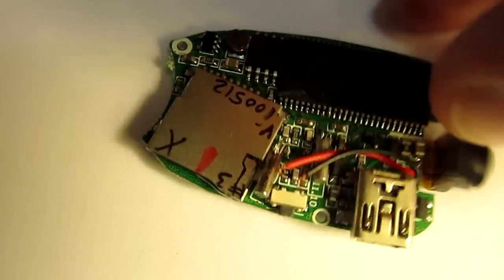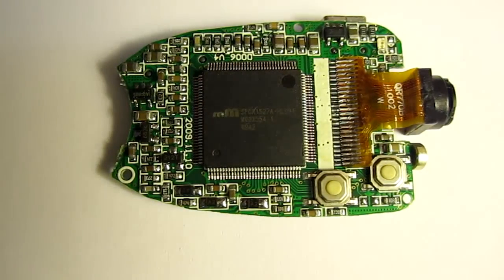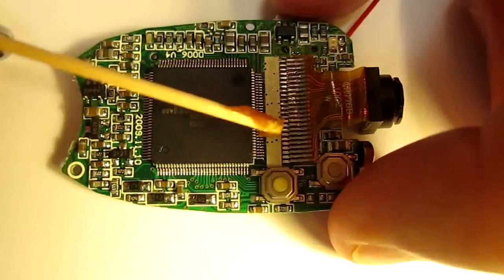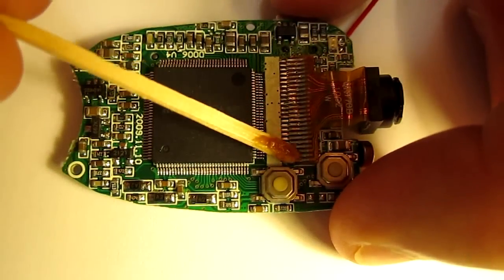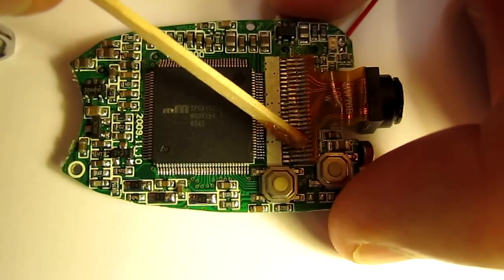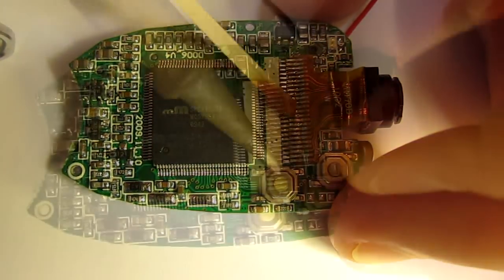This is the number 3 camera on the battery side, and this is the number 3 camera on the button side. We're going to unsolder the camera module, applying some soldering flux.